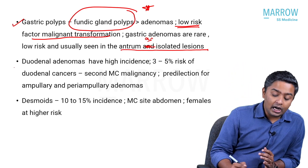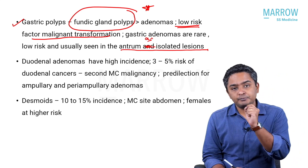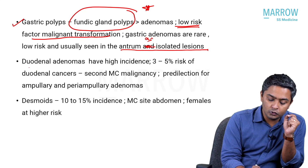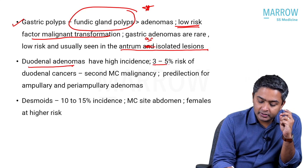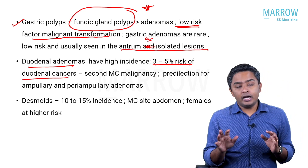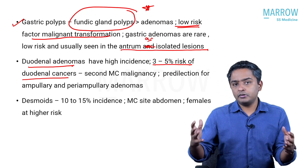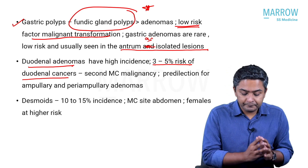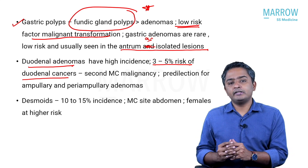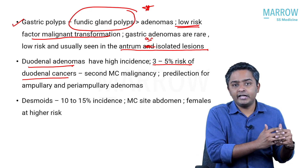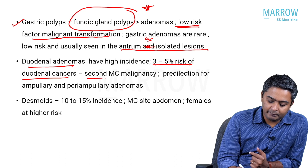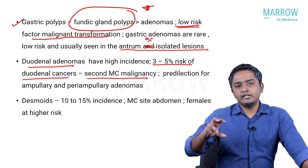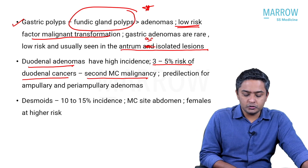Coming to the duodenum, duodenal adenomas are much more common and have a high incidence. Remember, there is a 3 to 5% risk of duodenal cancers. Though less than the near-100% colonic cancer risk in classic FAP, a 5% risk of duodenal cancer is still considerably high. That makes duodenal malignancies the second most common cancer in a patient with FAP, including biliary tract and periampullary cancers around the duodenum.